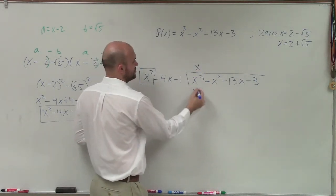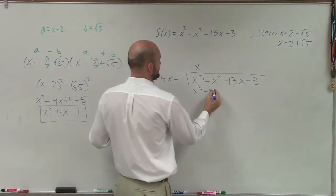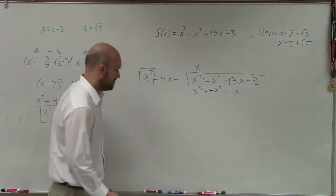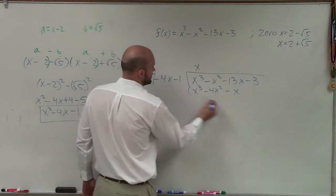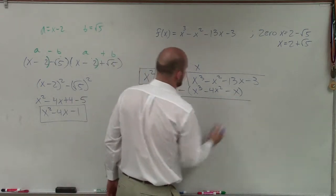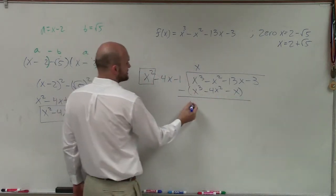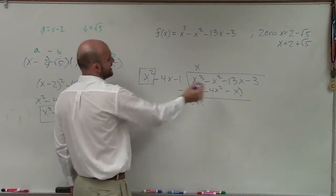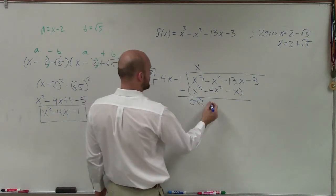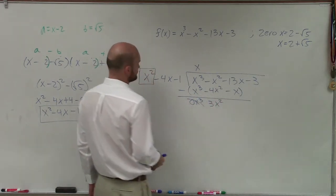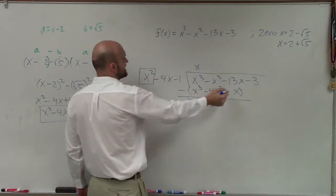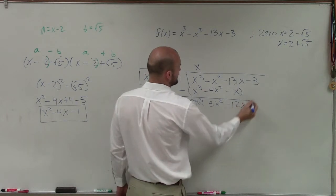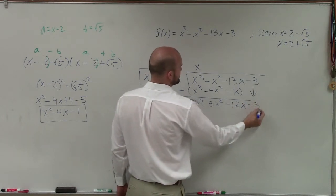Remember, when using long division, we always divide with our leading term, and whatever our quotient is, we multiply it by every term of our divisor. x² goes into x³, x times. x times x² is x³; x times -4x is -4x²; and x times -1 is -x. Then we group our second term and subtract the whole row. x³ - x³ = 0; -x² minus (-4x²) becomes +3x²; and -13x minus (-x) becomes -12x. Then bring down the -3.